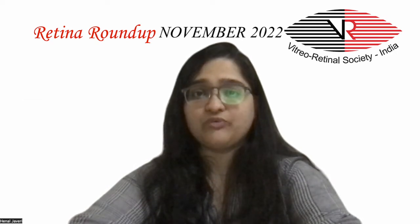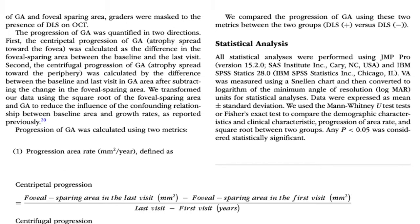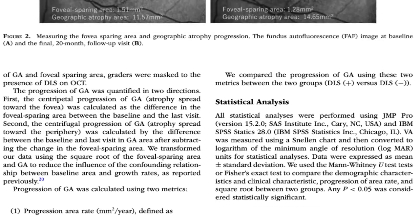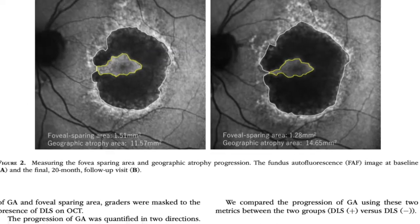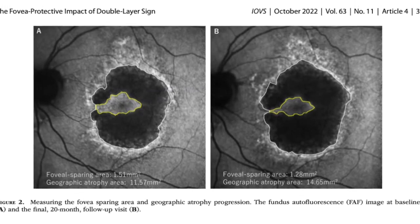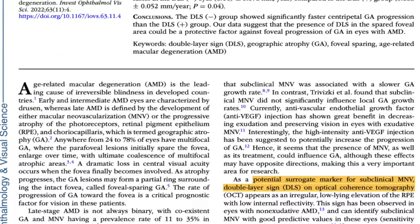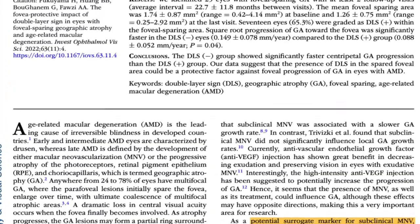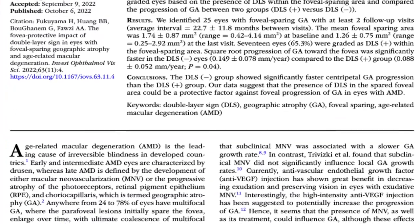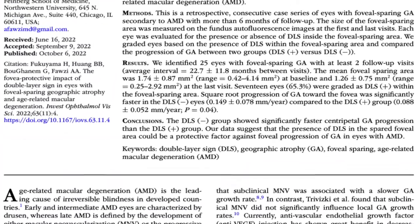65.3%, that is 17 eyes, were graded as DLS positive within the foveal-sparing area. The progression of GA towards the fovea was significantly faster in DLS negative eyes compared to the DLS positive group. DLS is a marker of subclinical macular neovascularization with high specificity and sensitivity.